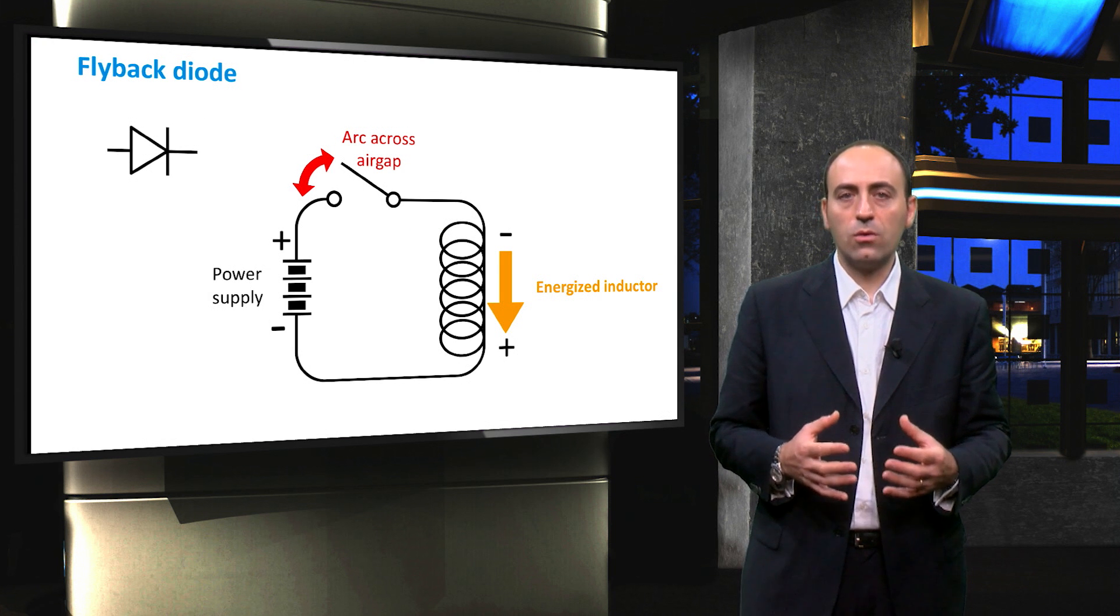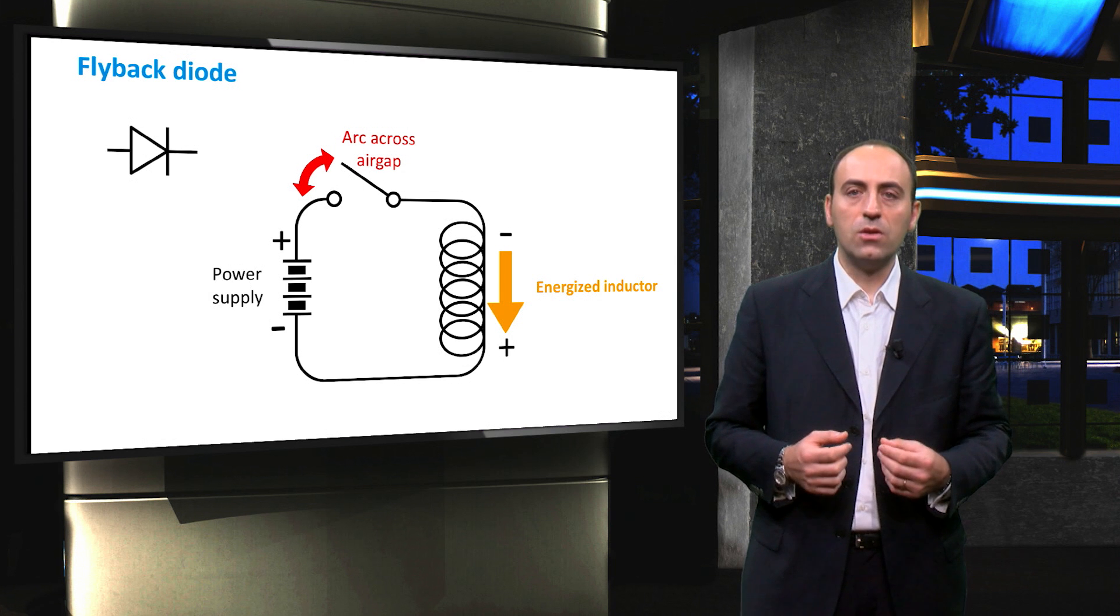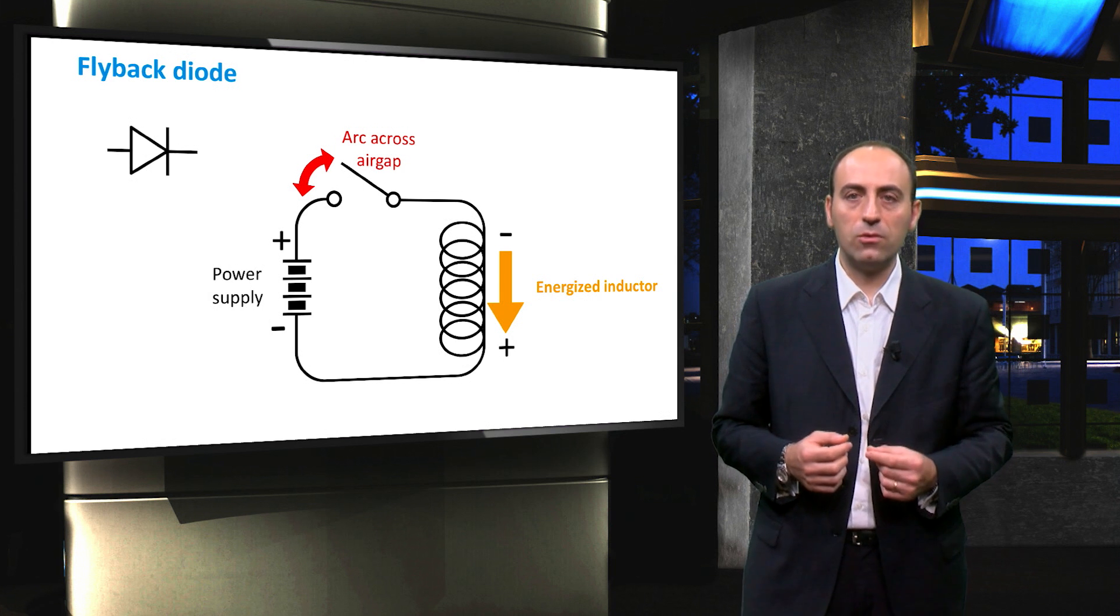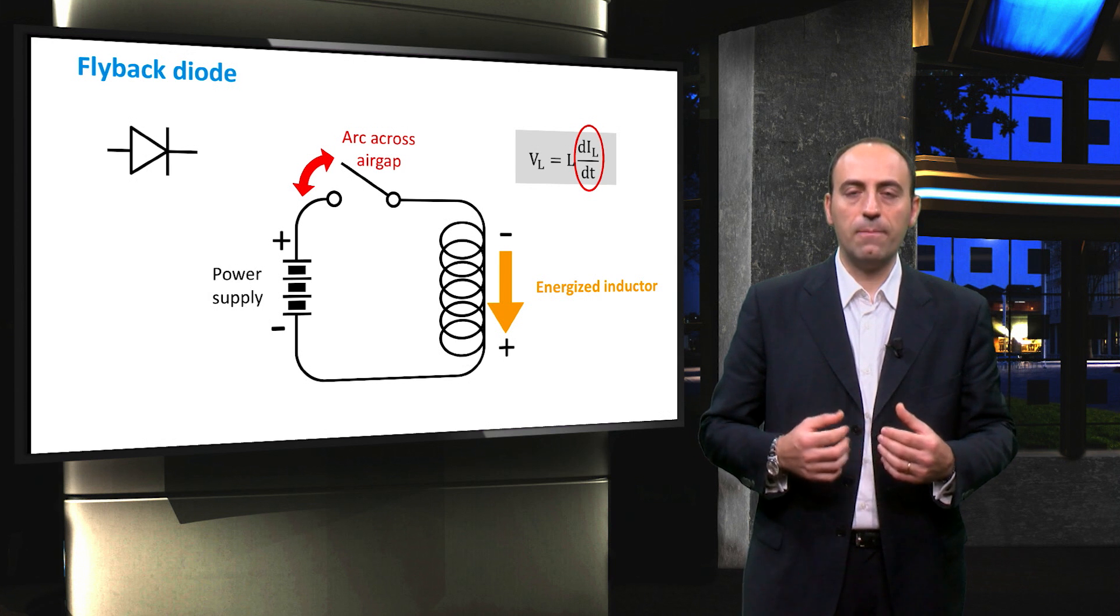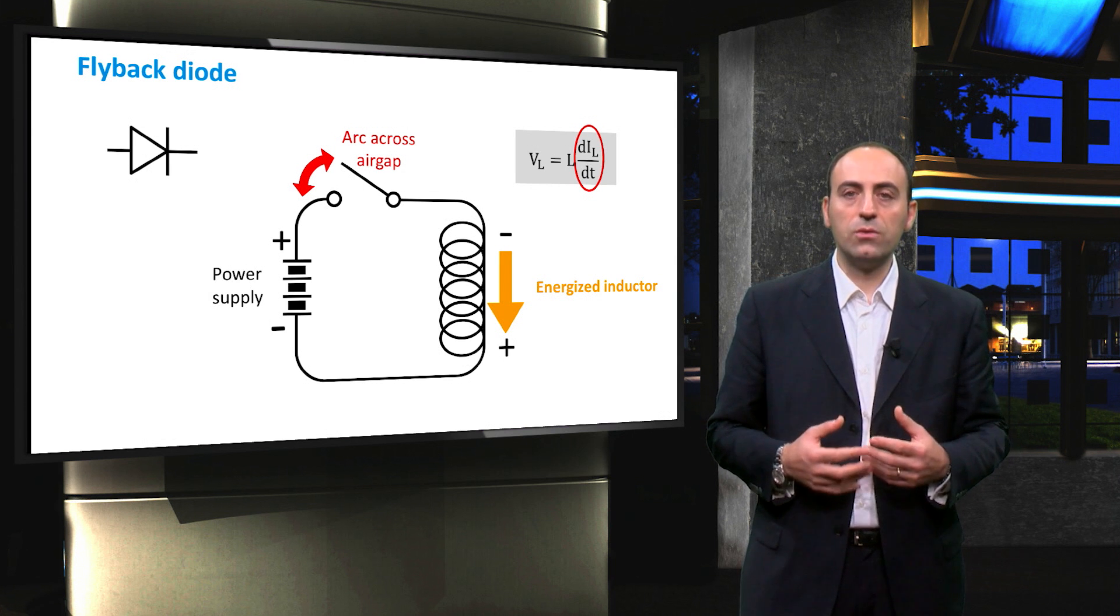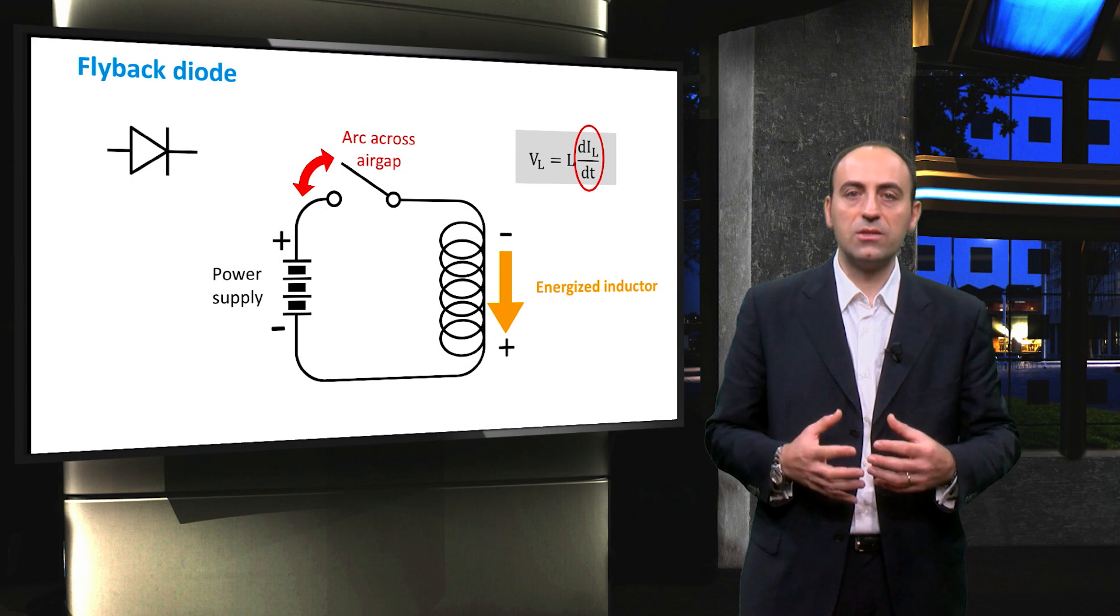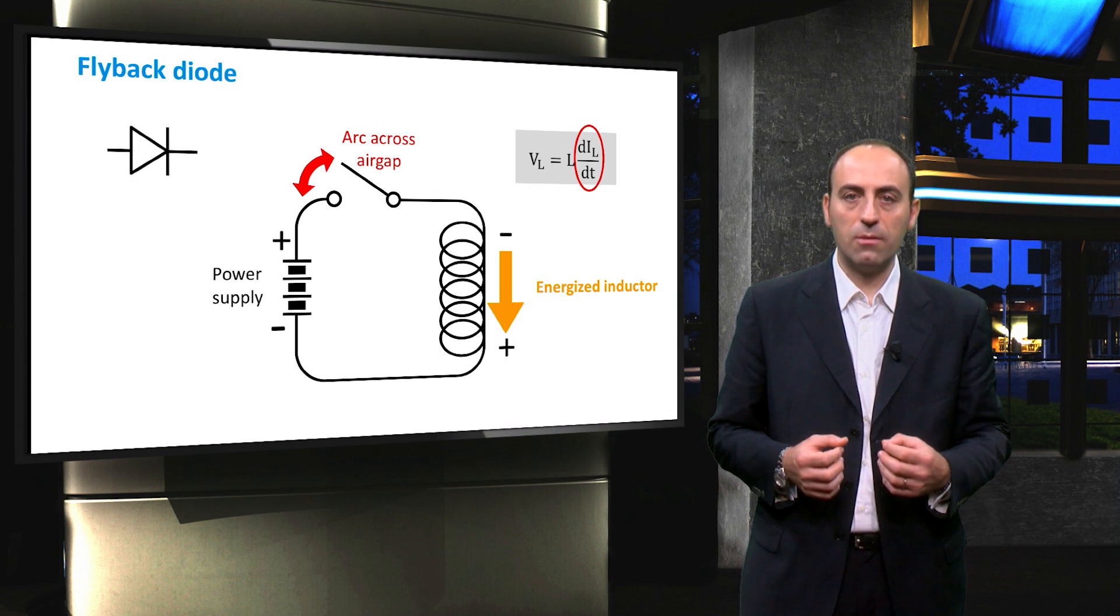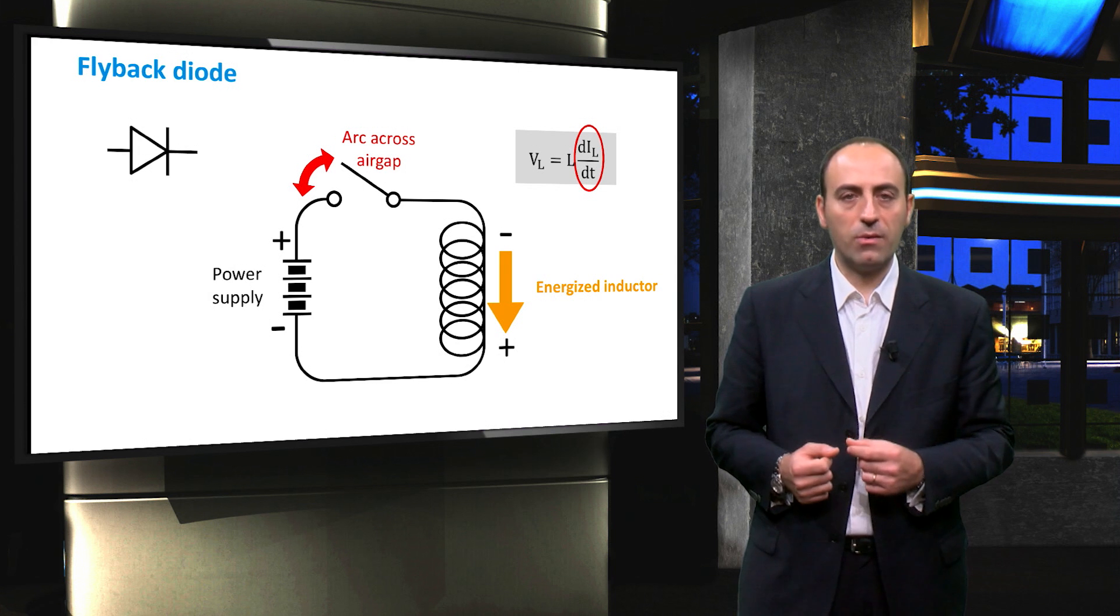The problem might occur when the switch is very fast, so you have, in a very tiny amount of time, that the derivative of current becomes very high. This can be potentially dangerous, since if the necessary environmental conditions are met, you could even have a spark.